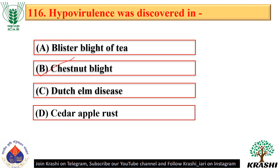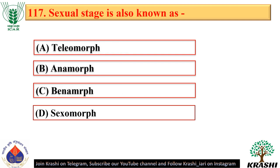Hypovirulence is the reduced ability of a pathogen to infect or reproduce on host tissues. The sexual stage is also known as teleomorph — option A.